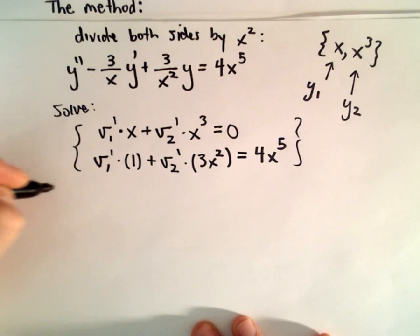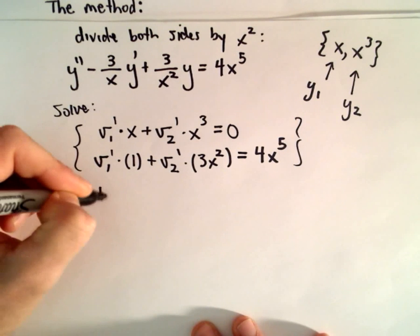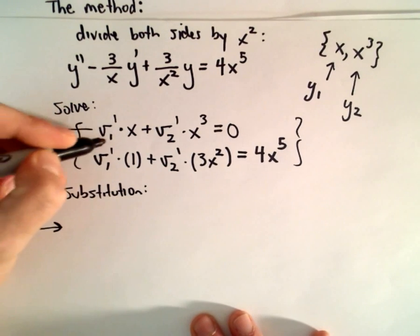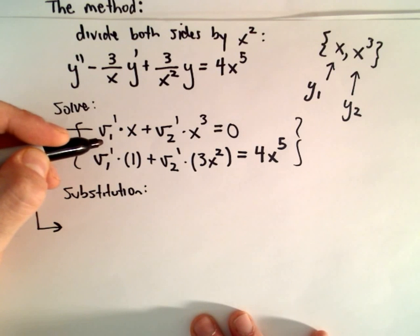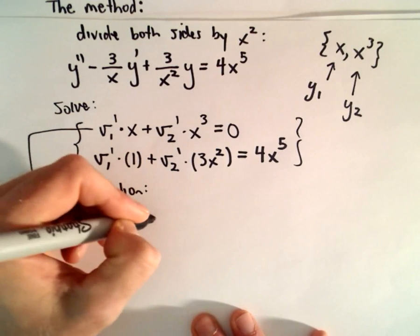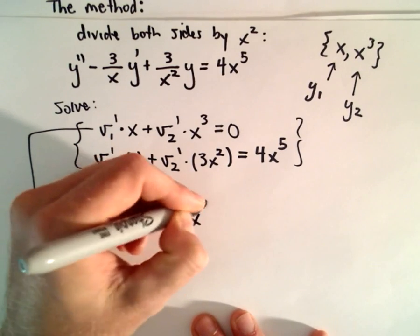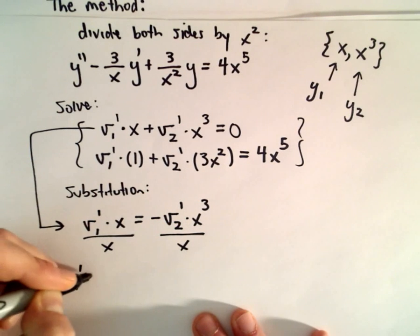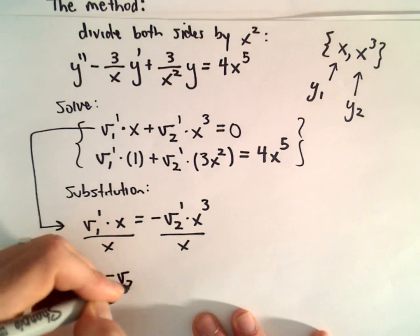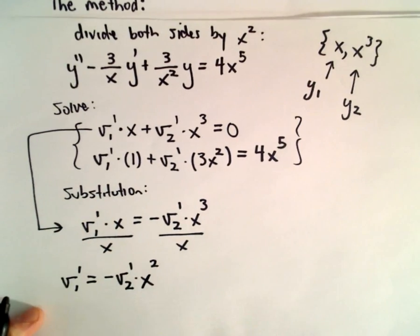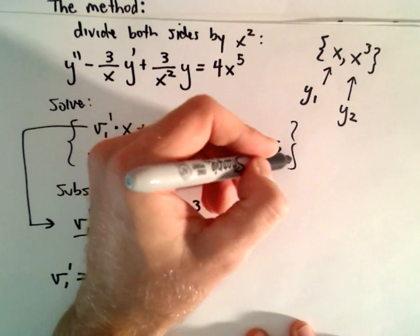I'm going to solve this system using substitution. From the first equation, solving for v₁': v₁'·x = −v₂'·x³, so dividing both sides by x gives v₁' = −v₂'·x². Now I'll substitute that into the second equation.